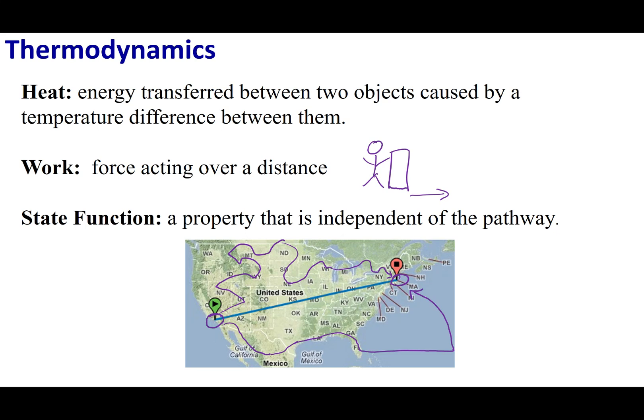In both of these, I've traveled different distances. I've taken different paths. The state function says that I don't need to look at the paths. If I want to look at the net displacement, I'm going to just look at where I started and where I ended up. What I can say is that New York and California, they're always going to be about 3,000 miles apart. It doesn't matter what path I take. That distance is fixed.